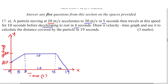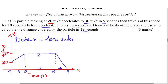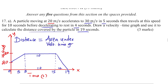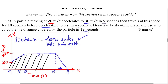We are supposed to calculate the distance covered by the particle in 19 seconds, from 0 all the way to 19. One important thing we need to know is that distance in a velocity-time graph is obtained by calculating the area under the velocity-time graph. When we get the area enclosed by this graph, that gives the total distance.